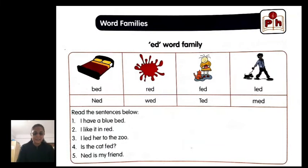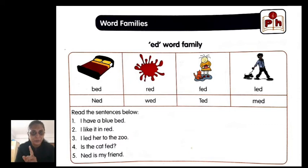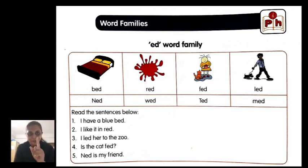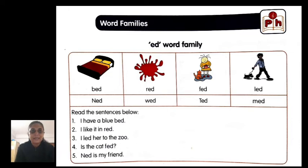Open your SR book, SR 11. It's your word family. In our previous classes we did these spellings. Now in today's class let us read the sentences below. Take your pencil and wherever the four words from the word family — three-letter ED word family — appear, circle them. Number one: I have a blue bed. Number two: I like it in red. Number three: I led her to the zoo. Number four: Is the cat fed? Number five: Ned is my friend.